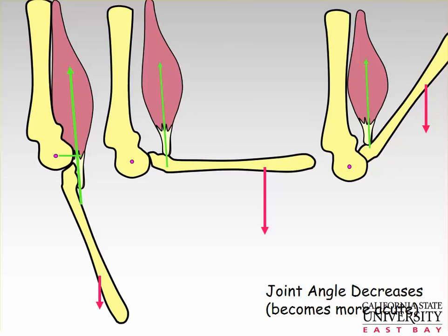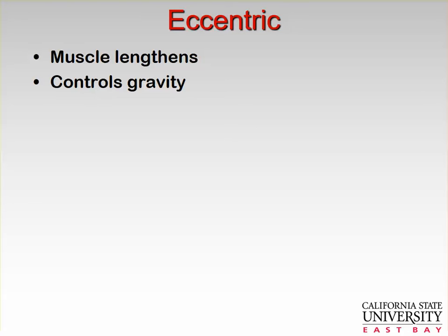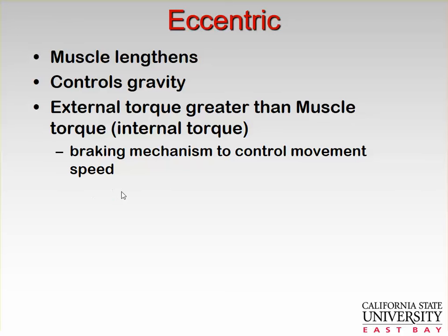Now let's discuss eccentric contractions. Simplistically, it's when the muscle lengthens. Another way to view it is that it is controlling gravity — gravity accelerates at 9.81 meters per second squared, and you must control that speed as you lower anything. The external torque of the dumbbell times the external moment arm is greater than your internal muscle torque. It is a braking mechanism to control movement speed, typically occurring during the follow-through phases of most activities.